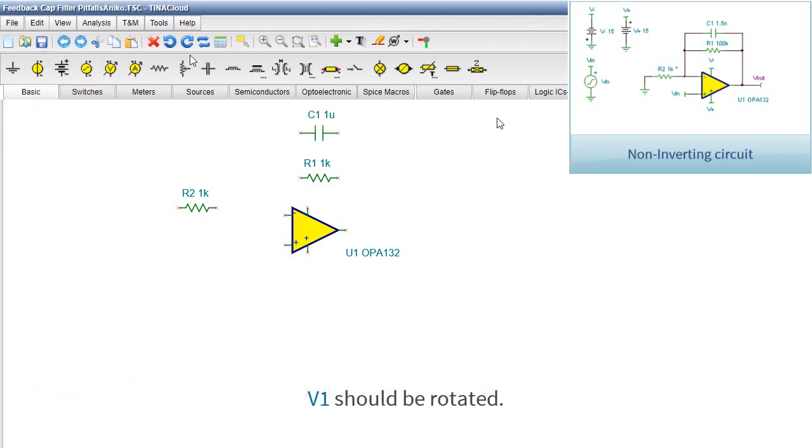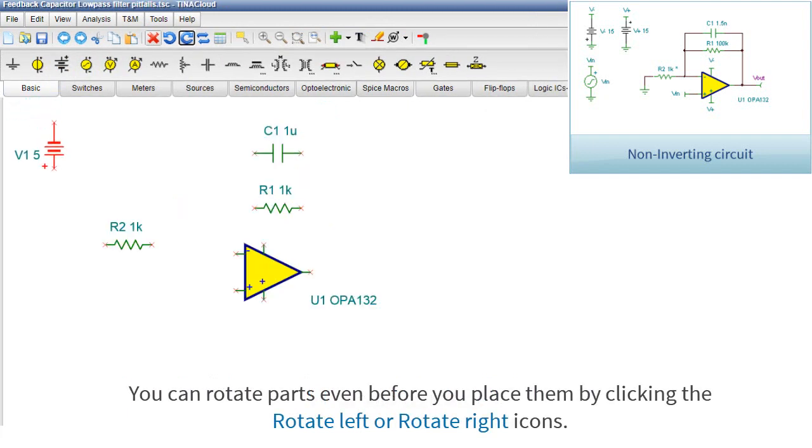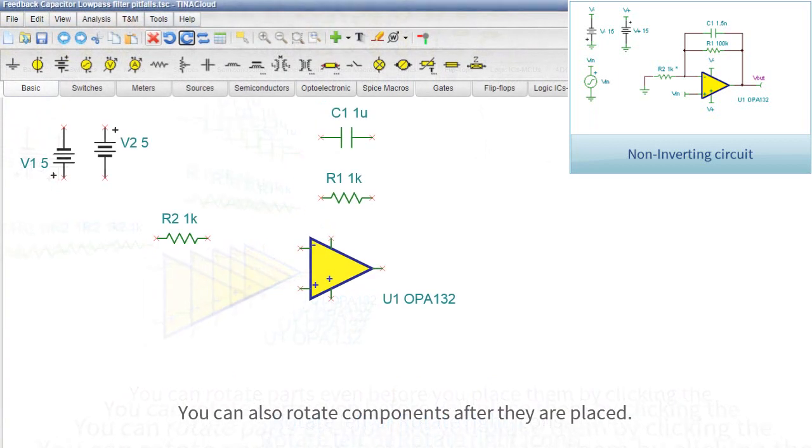V1 should be rotated. You can rotate parts even before you place them by clicking the Rotate Left or Rotate Right icons. You can also rotate components after they are placed.